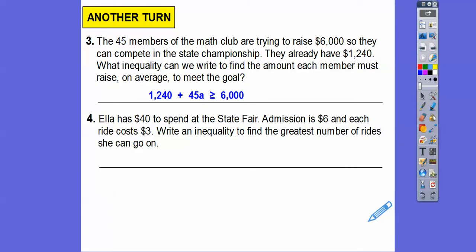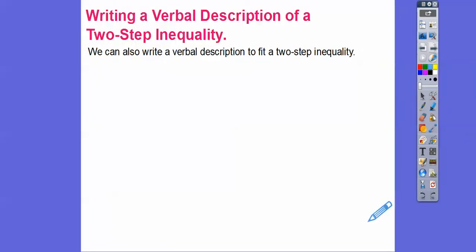Ella has $40 to spend at the state fair. Admission costs $6 and each ride is $3. Write an inequality to find the greatest number of rides she can go on. So she has $40. She can't spend more than that, so it's going to be something less than or equal to $40. So $6, that's going to be included in that, and then the $3 per ride right there. So the $6 entry fee plus $3 a ride has to be less than or equal to $40. And that would give us a good inequality that represents that.